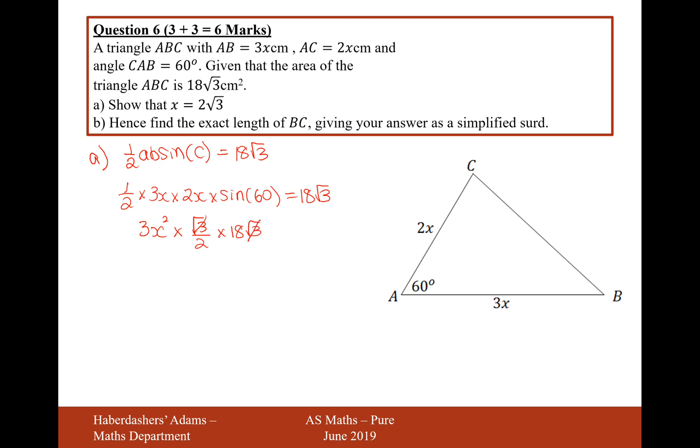So the root 3s will cancel out on both sides. Times the 2 on the other side, you get 3x squared equals 36. Divide by 3 and you get x squared equals 12. So therefore x equals root 12, which equals 2 root 3. And there we are, that's the answer for part A.